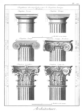Bossage: uncut stone that is laid in place in a building, projecting outward from the building, to later be carved into decorative mouldings, capitals, arms, etc. Bossages are also rustic work, consisting of stones which seem to advance beyond the surface of the building by reason of indentures or channels left in the joinings, used chiefly in the corners of buildings and called rustic quoins.